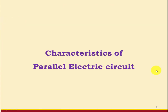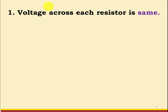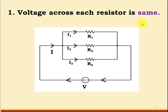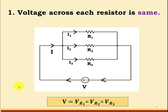Now let us study the characteristics of parallel electric circuit. Characteristic number one: voltage across each resistor is the same. As we can see in this example, if you measure the voltage across R1, R2, and R3, these three resistors are connected between two common points. Therefore, the voltage across each resistor will be the same, and that voltage will be the supply voltage V. So we can write V = V_R1 = V_R2 = V_R3.